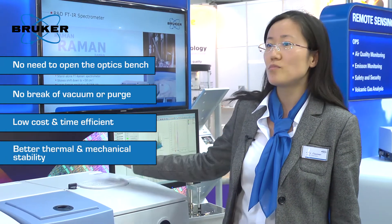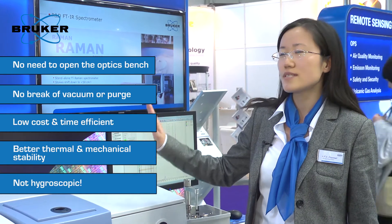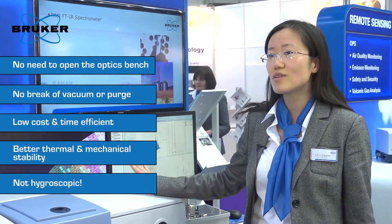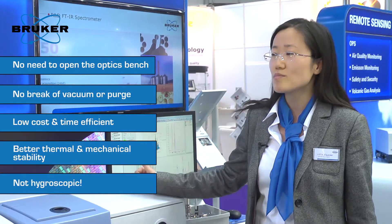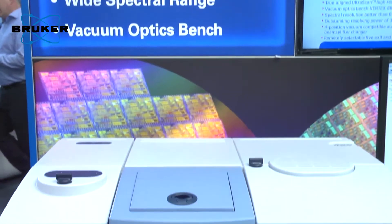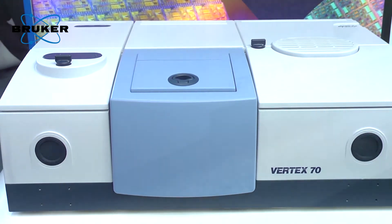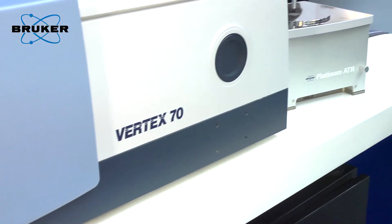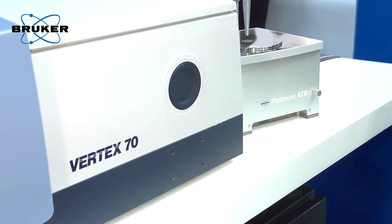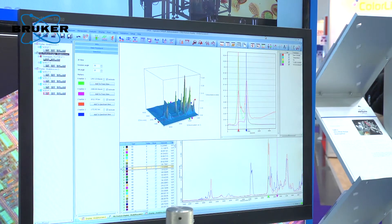Now with the recently introduced new broad range MIR-FIR beam splitter, there is no need anymore to open the optics bench. We can cover the whole spectral range from 6,000 wavenumber to 10 wavenumber with one beam splitter, and further combined with the very new wide range MIR-FIR DTGS detector, we can do almost all transmittance, reflectance, or ATR measurements.